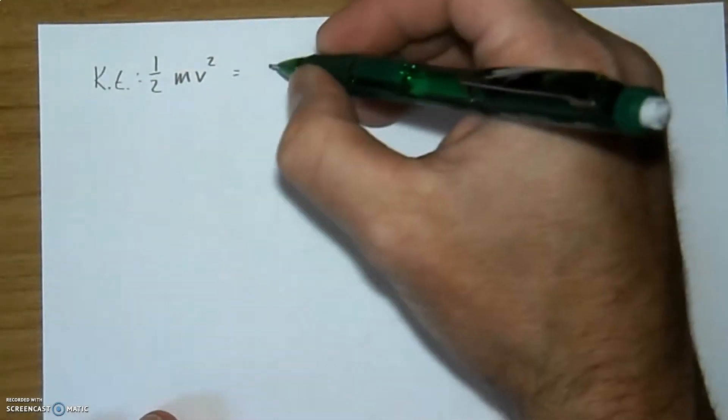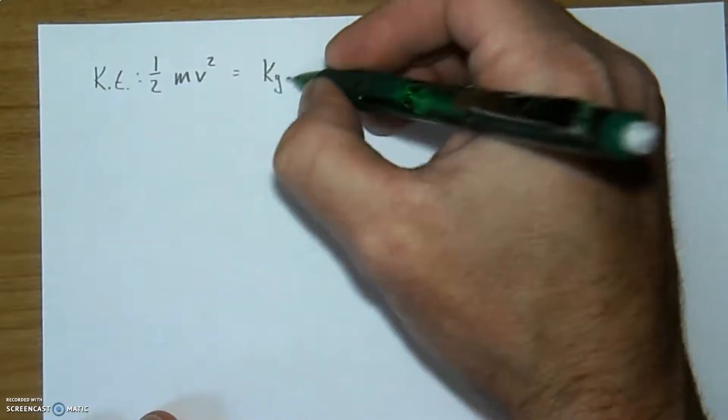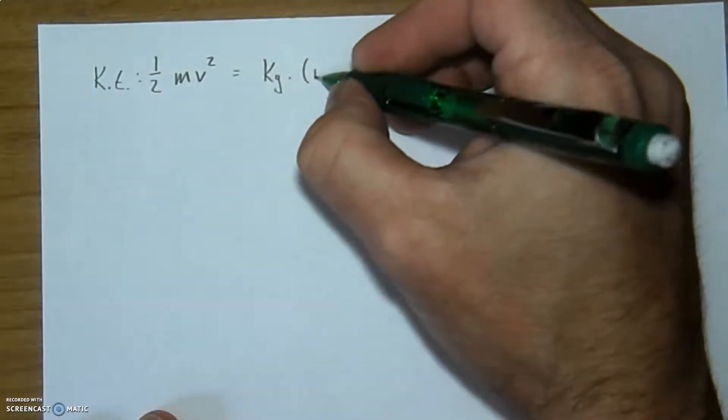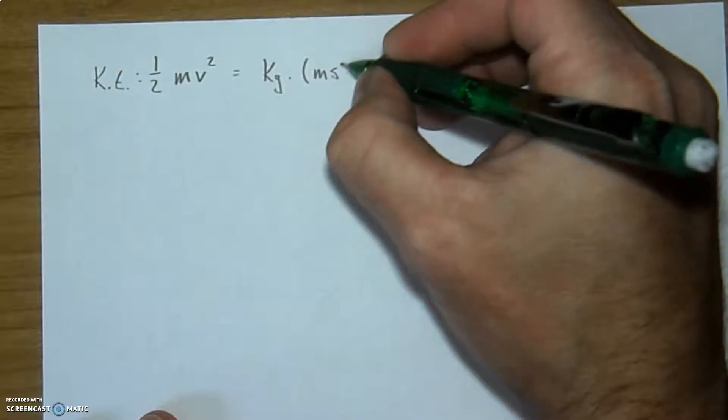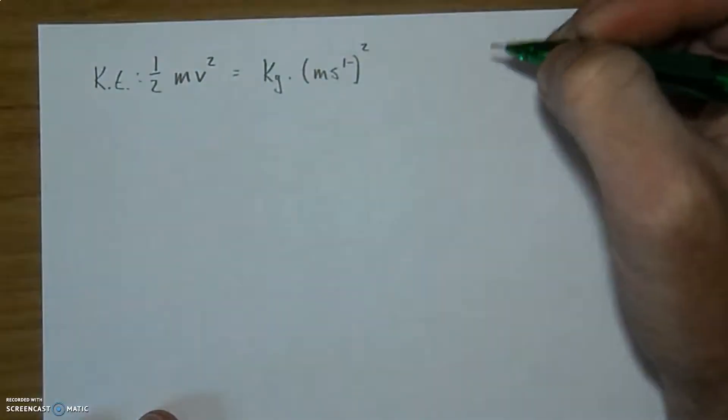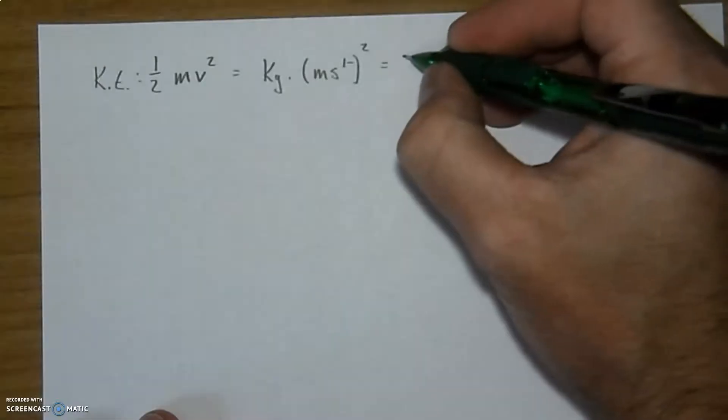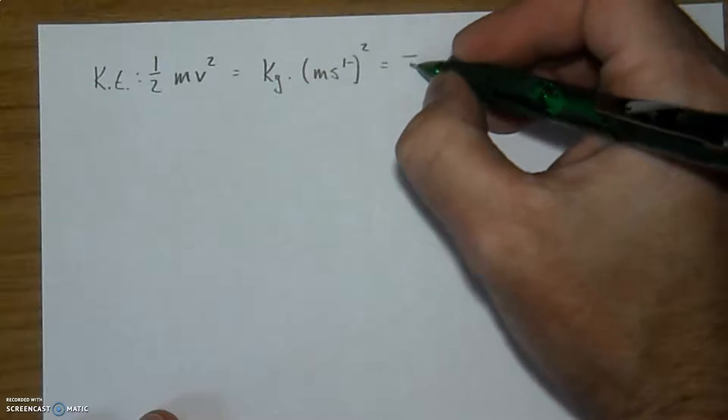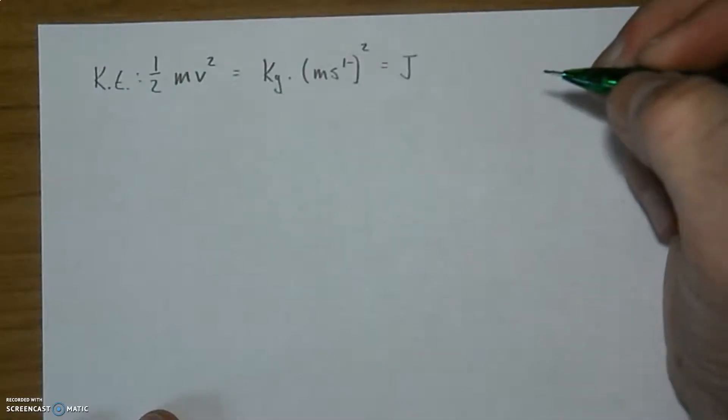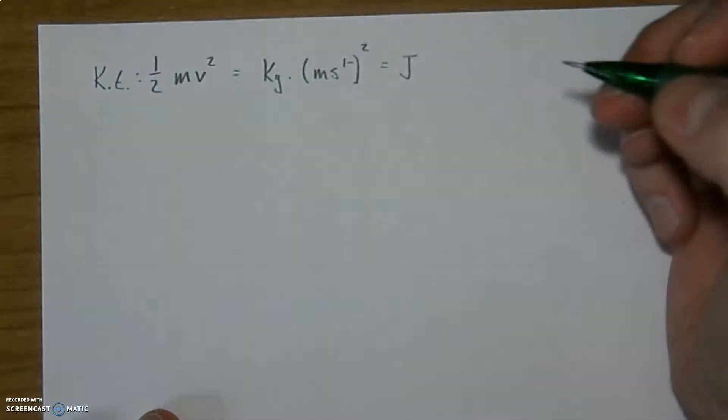And if we break that into its units, mass will measure in kilograms, and velocity will do in meters per seconds squared. So those are the units of kinetic energy. And together, the product of those things is something we more simply just call a joule, a joule of energy, which you probably remember from regular chemistry.